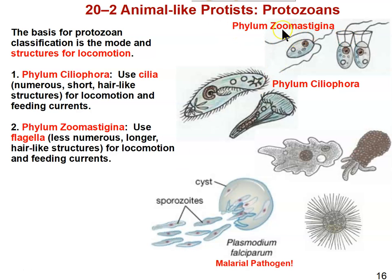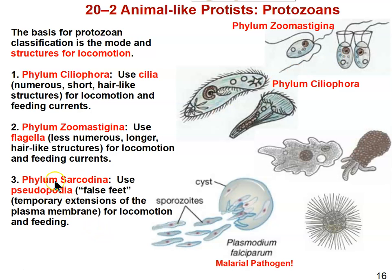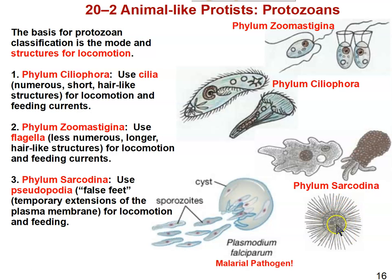These are in the phylum Zoomastigina, which are flagellated protists, also commonly known as zooflagellates. Then we have the phylum Sarcodina, which use pseudopodia — false feet — which are temporary extensions of the plasma membrane to get around. They kind of just blob from one place to another. Some have evolved so that their pseudopodia are actinopods, which stick out from a silica shell through holes in the shell. One of the sarcodines shown is an amoeba that forms a shell around itself made of little particles it puts together.